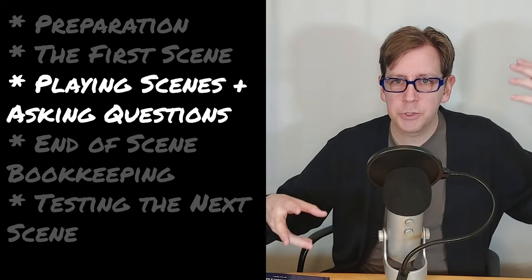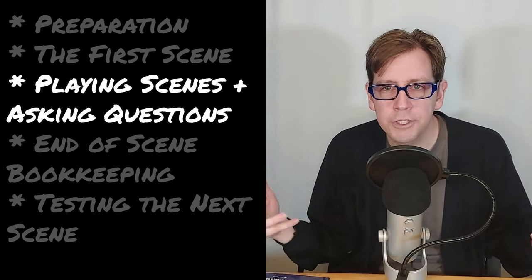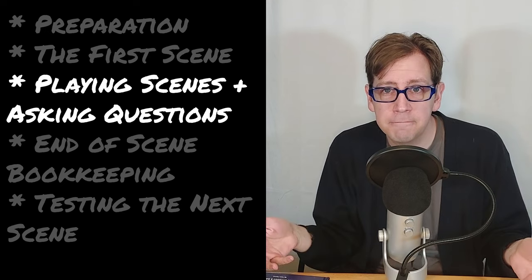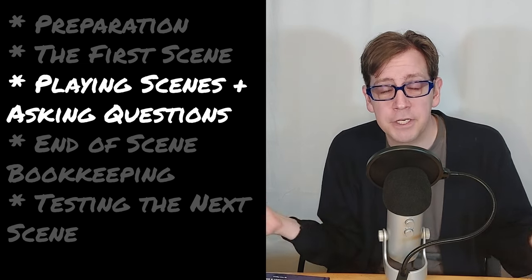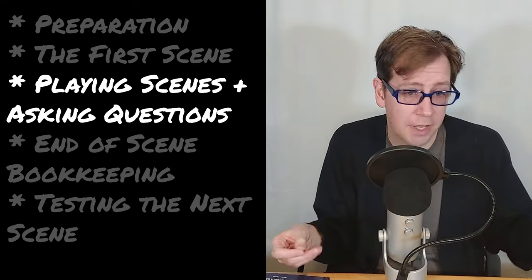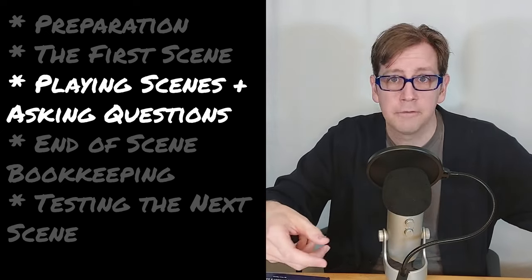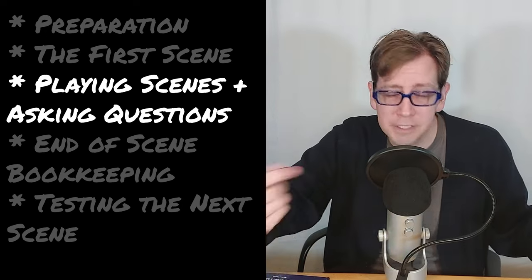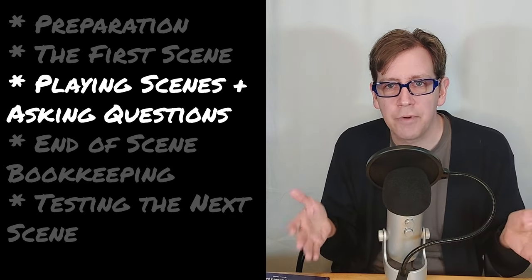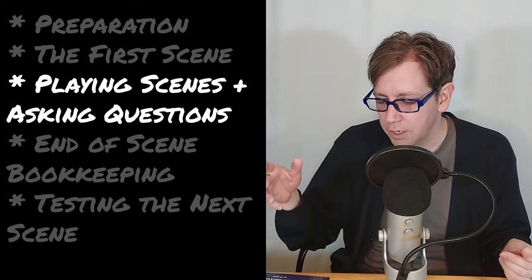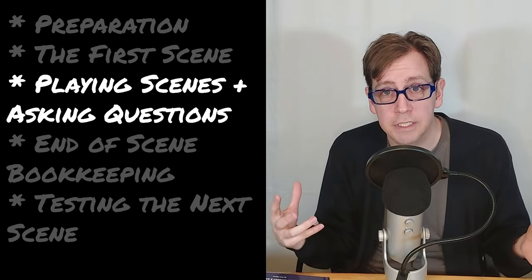A typical flow might be: at the start of the scene, ask a couple of oracle questions to get more information about the situation, ask a fate question or two to test our expectations, and then based on the information gathered, our character does something — we ask a system question, did we succeed or fail? Then based on that, we're in a new situation. This is the gameplay loop. If you want to see this in action, on my channel my Gozer campaign uses Mythic Second Edition — you can see how I use it and how it interacts with the system I've chosen.